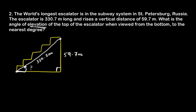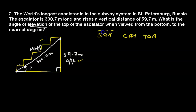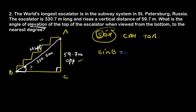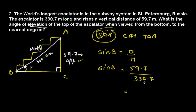Because we need the relationship between the angle and the side lengths of the triangle, we use trigonometric ratios. For the unknown angle, we are given the side opposite to it (59.7 m) and the hypotenuse (330.7 m), since this side is opposite the 90-degree angle. Opposite and hypotenuse are used in the sine ratio. Calling this triangle ABC and looking for angle B: sin B = opposite over hypotenuse = 59.7 ÷ 330.7 = 0.18.